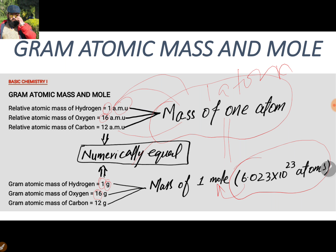I hope you understand how we take gram atomic mass as equal to one mole, or how it is said that one gram atom of an element corresponds to the particular number 6.023 × 10²³, which is also known as Avogadro's number. That is how gram atomic mass, or one gram atom of an element, is also equal to one mole of that element.